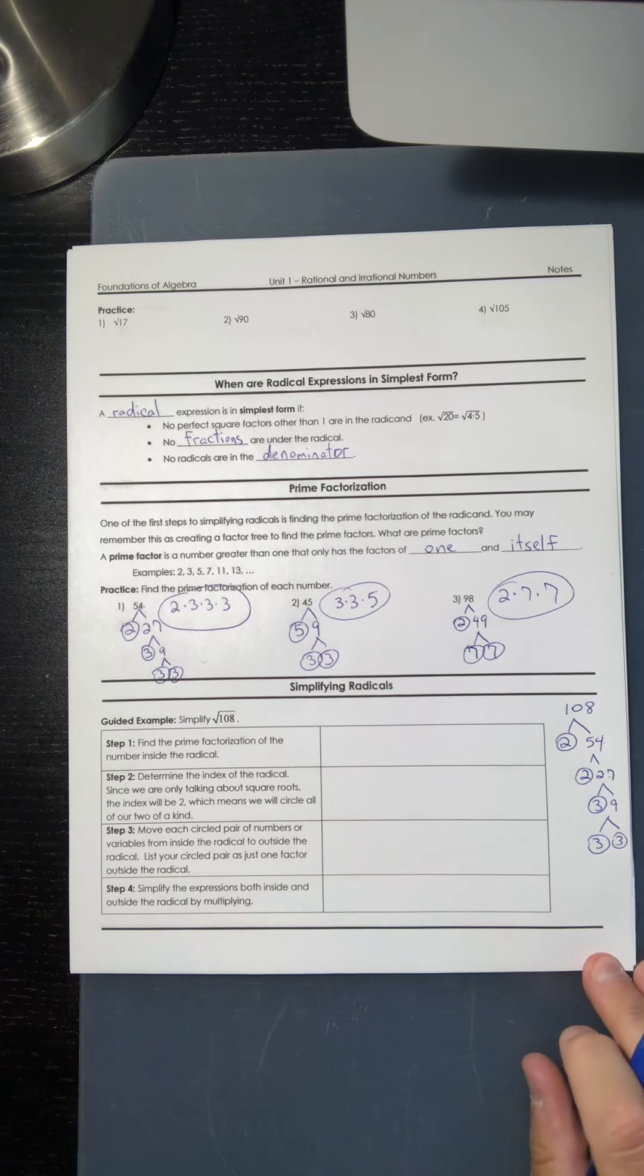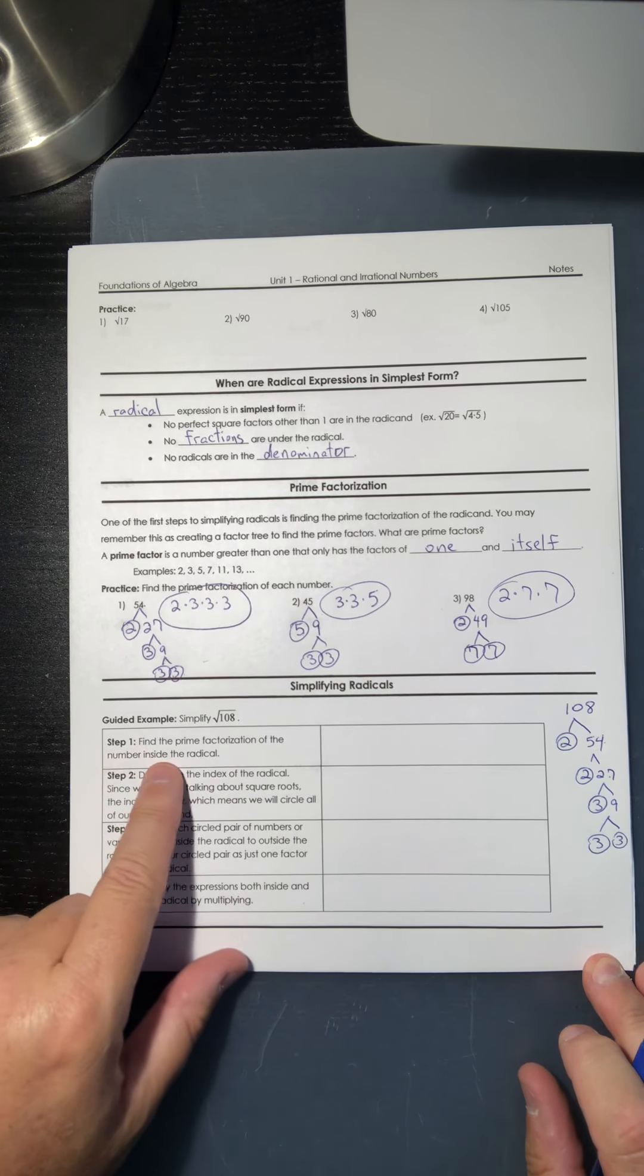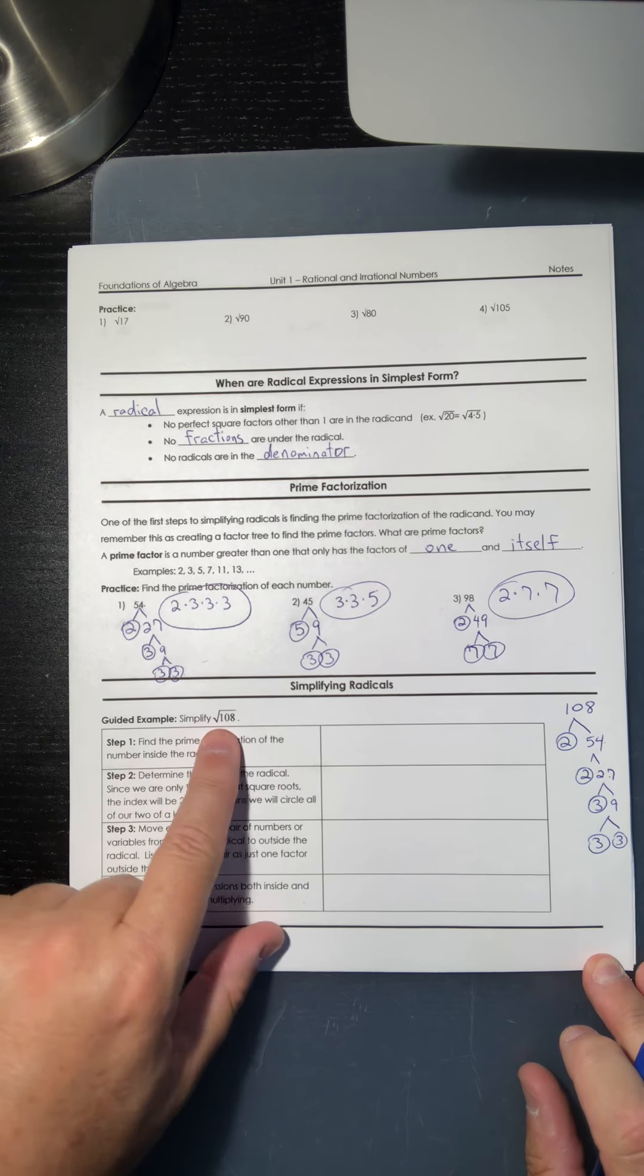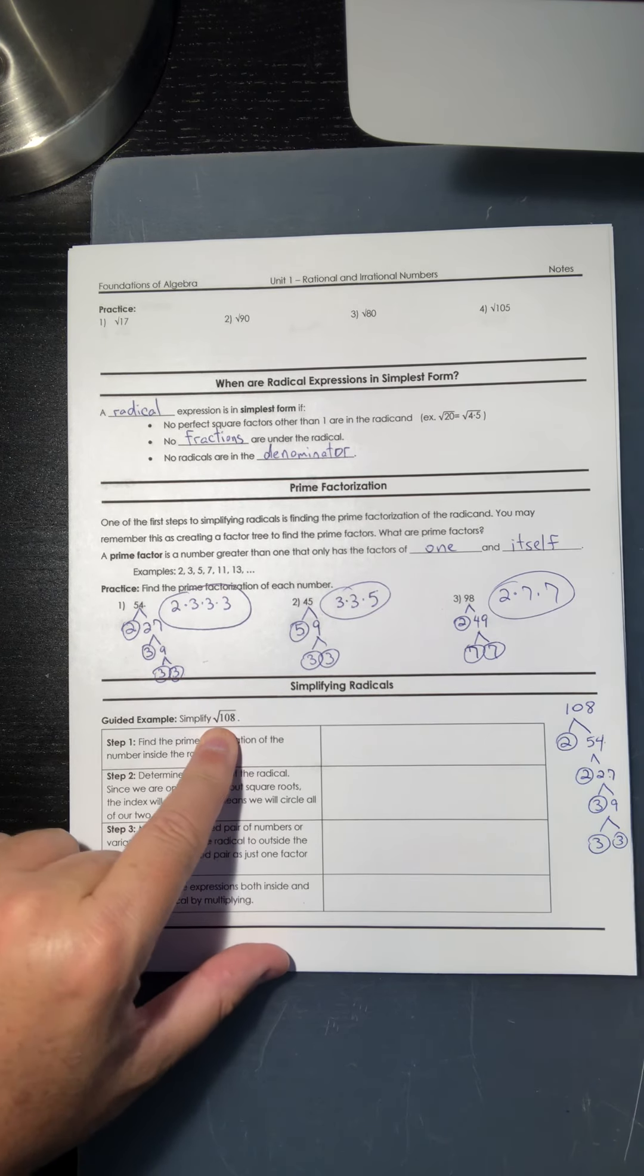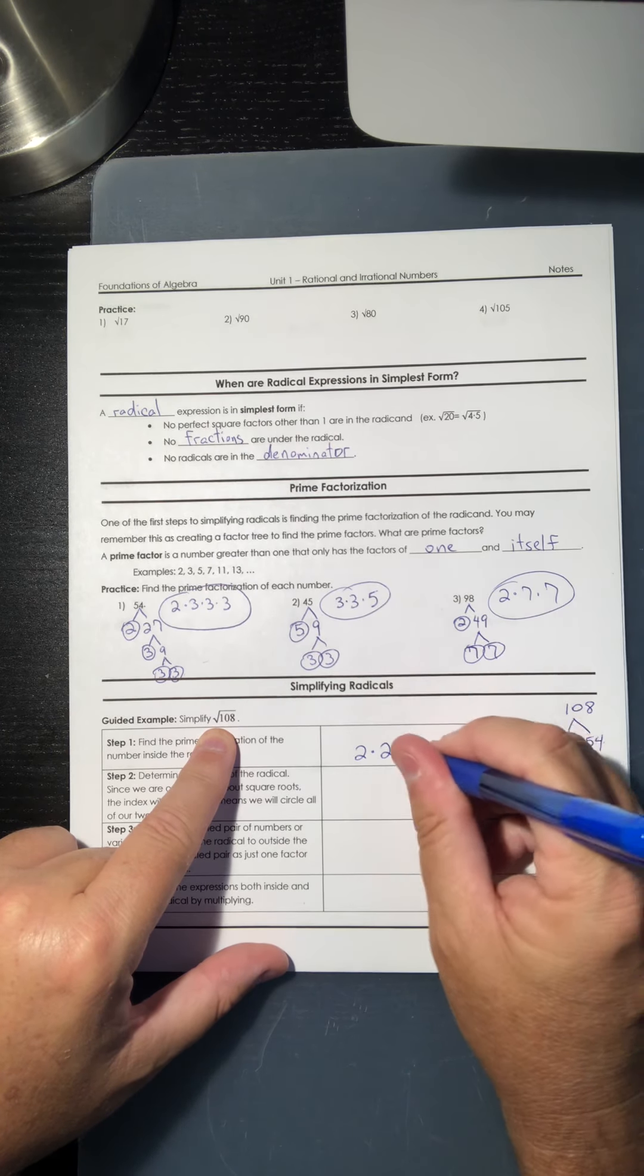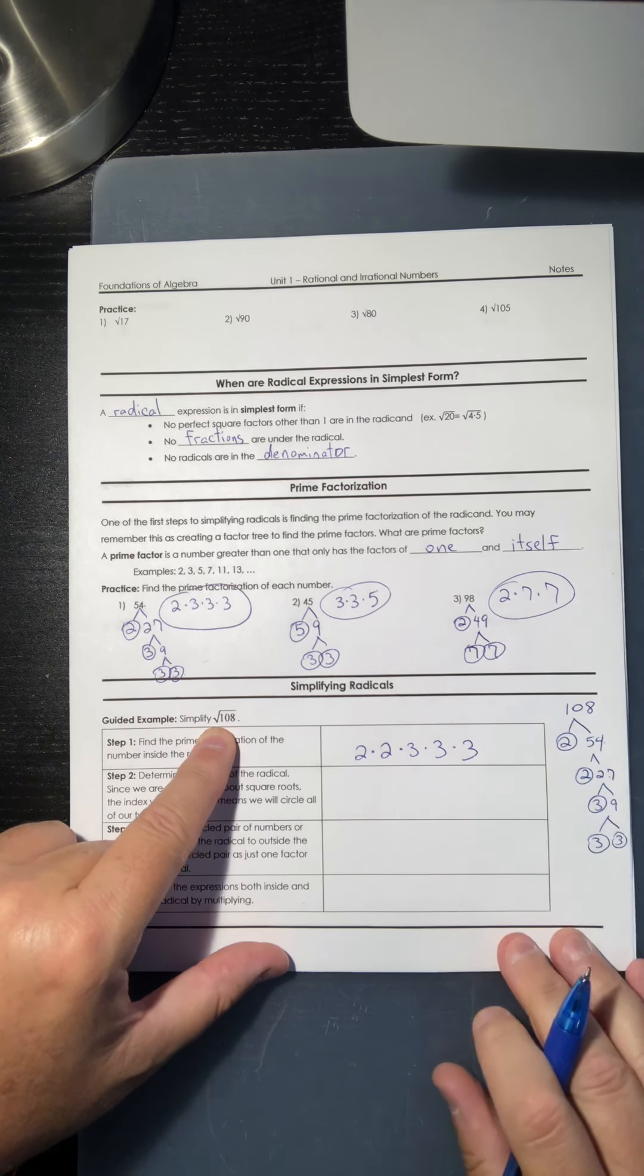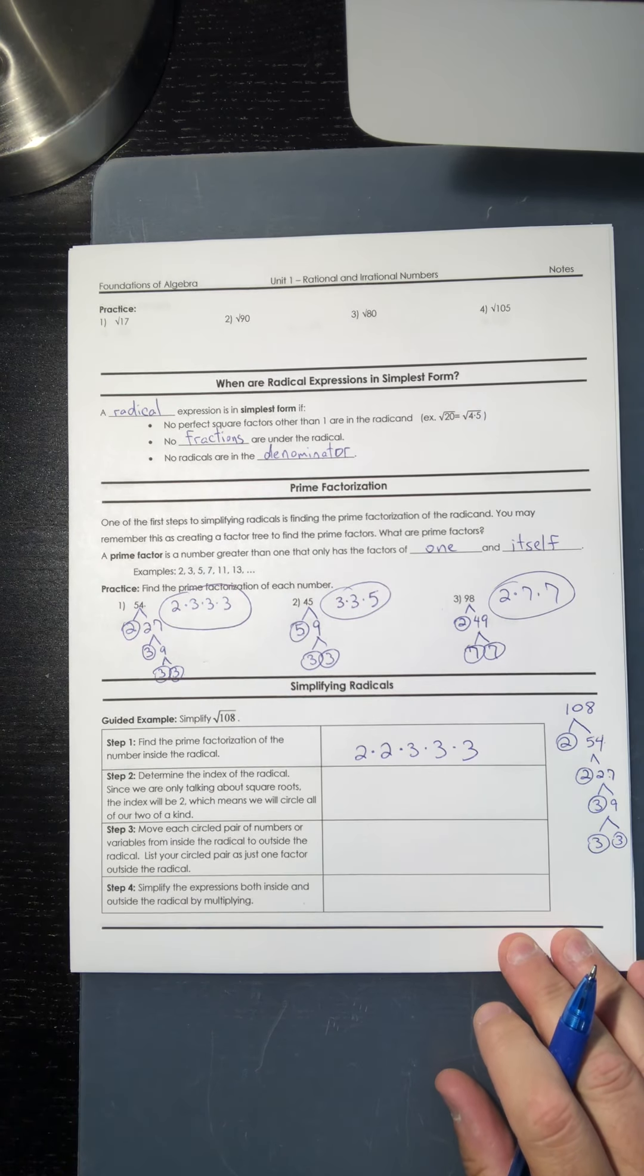Okay, so here's our answer for this first step one was find the prime factorization of the number underneath the house. So it's going to be 2 times 2 times 3 times 3 times 3.